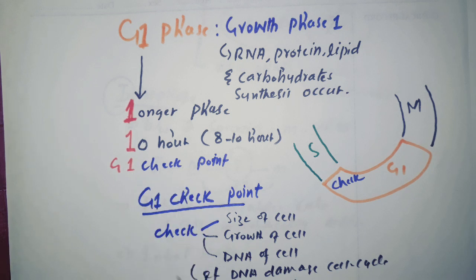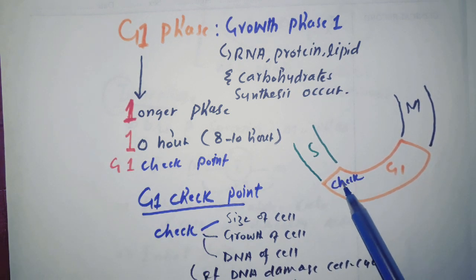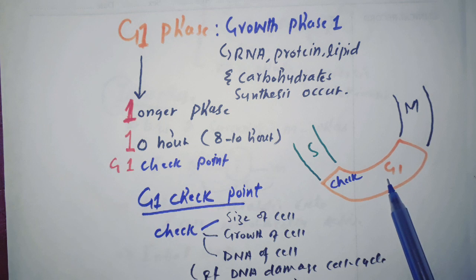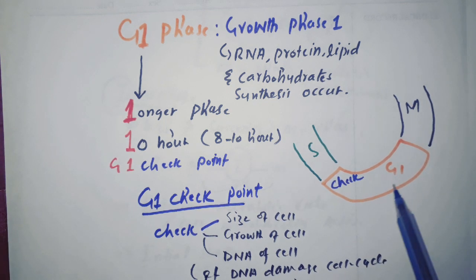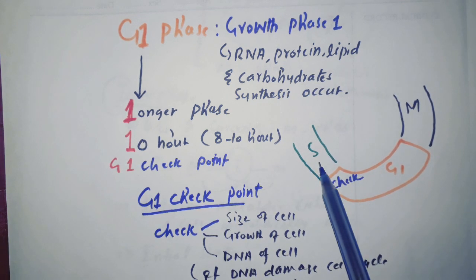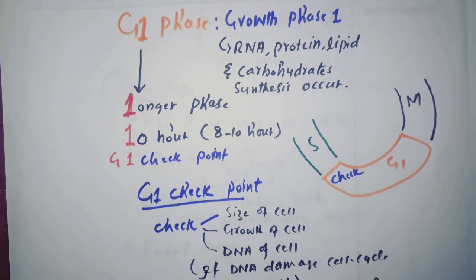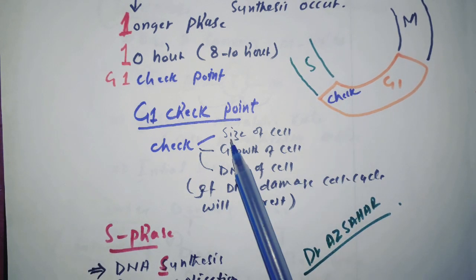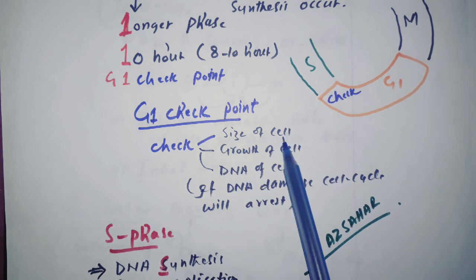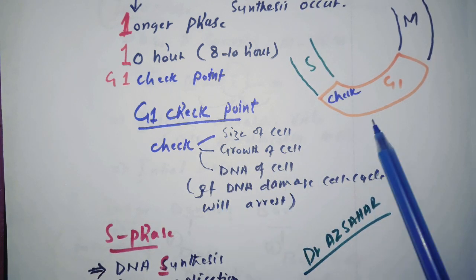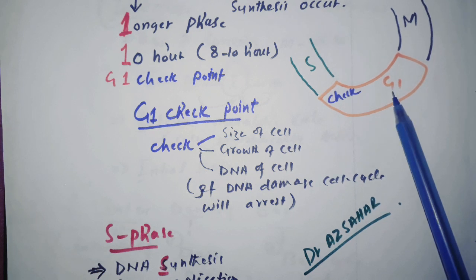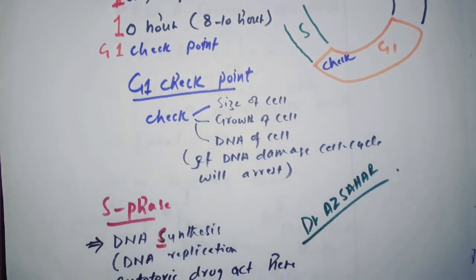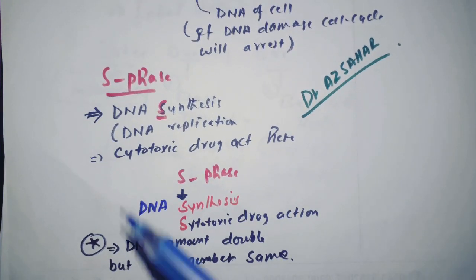There is a G1 checkpoint at the end of G1 phase. This checkpoint checks whether growth has occurred properly and whether there is any DNA damage. If growth has occurred properly and there is no DNA damage, the cell cycle proceeds toward S phase — synthesis or replication of DNA. The G1 checkpoint checks the size of the cell, growth of the cell, and DNA integrity. If there is damage, the cell cycle arrests at this point.